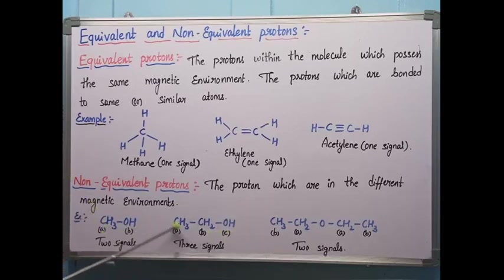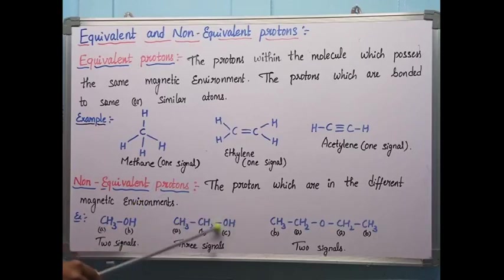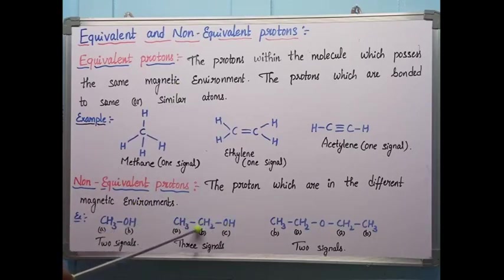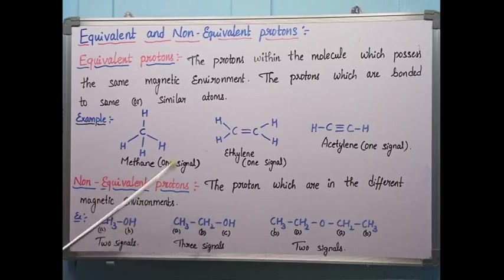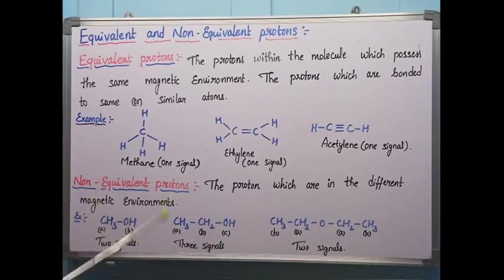In ethanol (ethyl alcohol) you can see three different sets of protons. One hydrogen is bonded to oxygen, two hydrogens on the CH2 are somewhat near to the oxygen, and the CH3 is completely far away from the oxygen. The three CH3 protons give one signal, the two CH2 protons give one signal, and the OH proton gives a separate signal — so three signals are observed for ethanol.